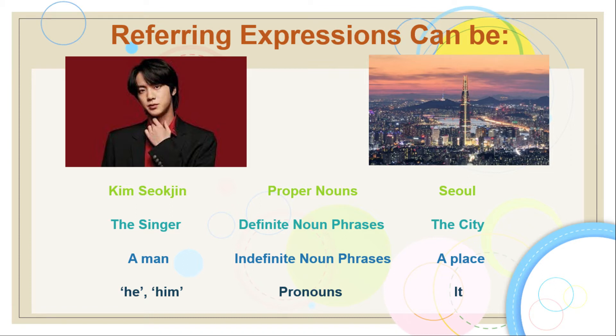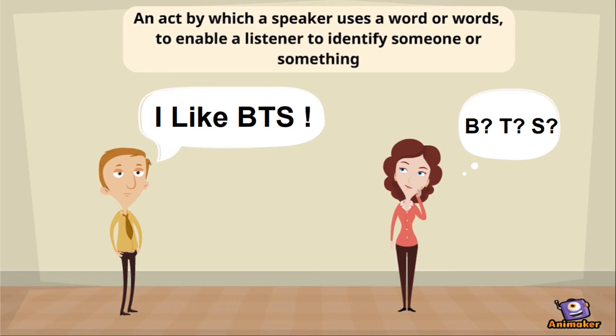Take a look at this picture. Referring expression has four types: 1. Proper noun, 2. Definite noun phrase, 3. Indefinite noun phrase, 4. Pronouns. The choice of referring expression is used by the speaker to assume that the listener already knows.